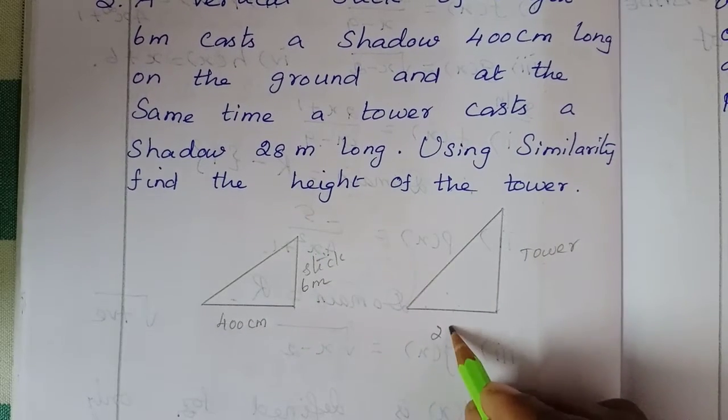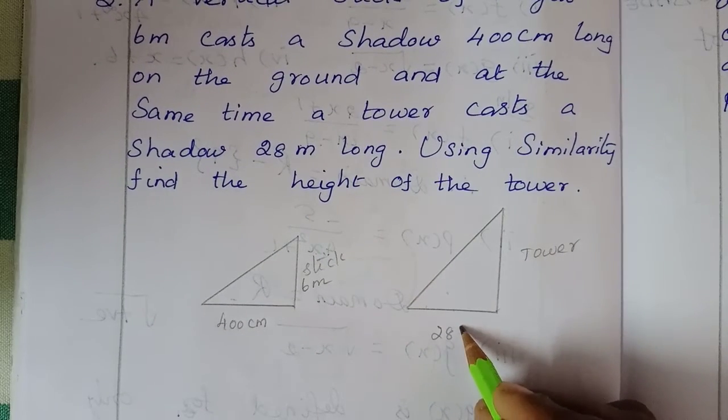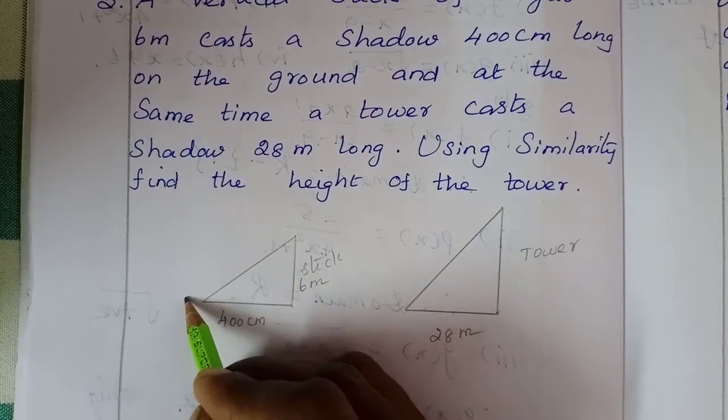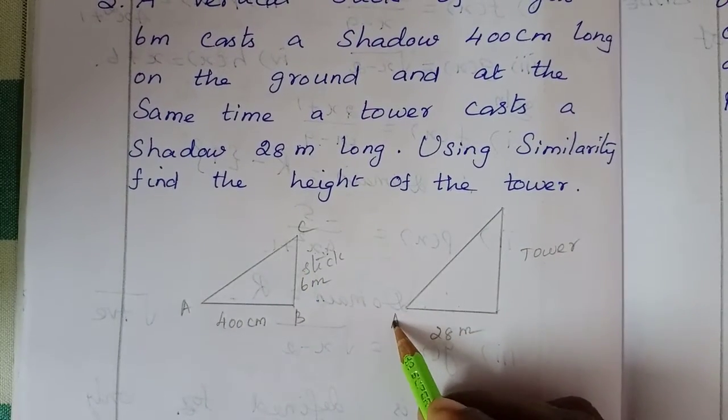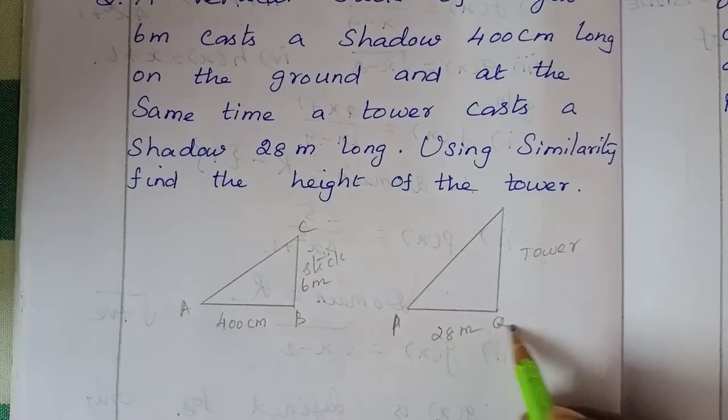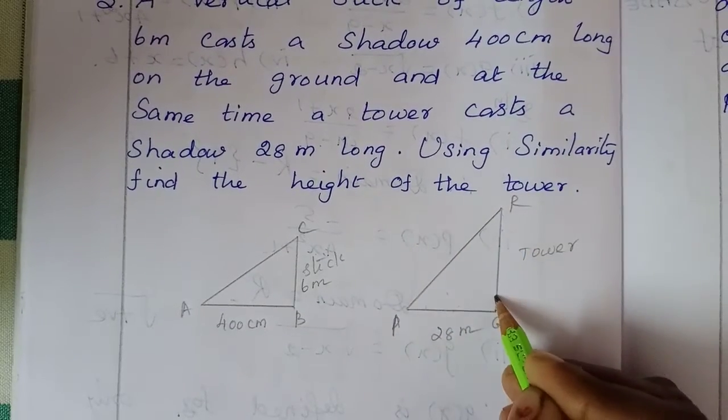So this is labeled A, B, C, P, Q, R. Here are two right angles.